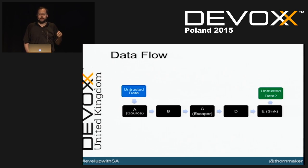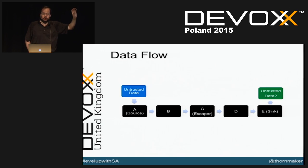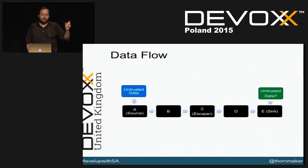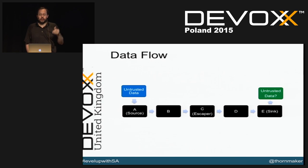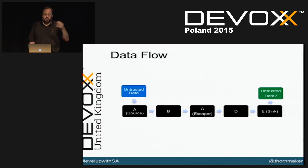A sink could be data reflected back to the user in an HTML page — that's the cross-site scripting example. Or untrusted data concatenated into a SQL query string and executed against a database — that's likely a SQL injection vulnerability. Or data evaluated as OGNL in a Struts application, which could lead to arbitrary code execution. Or untrusted data written into an XML file, causing XML injection. These are all data flow issues.